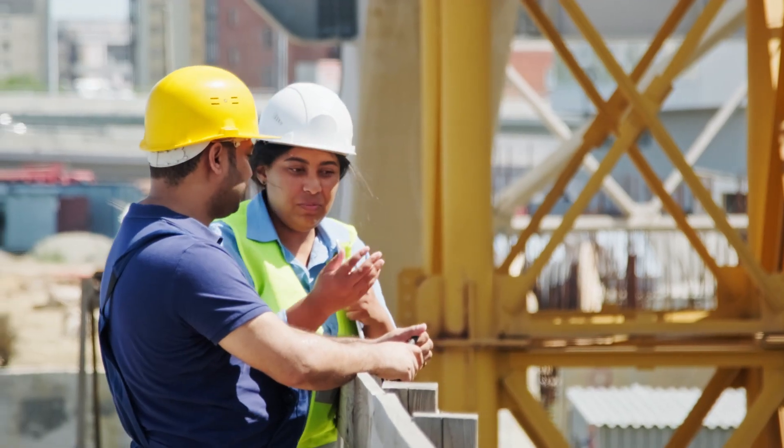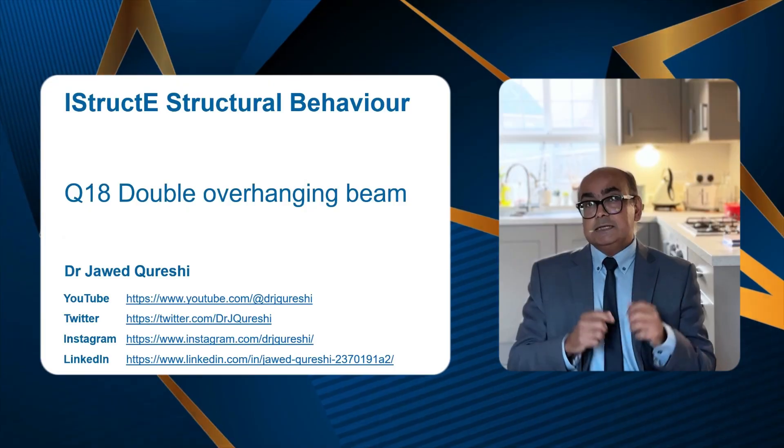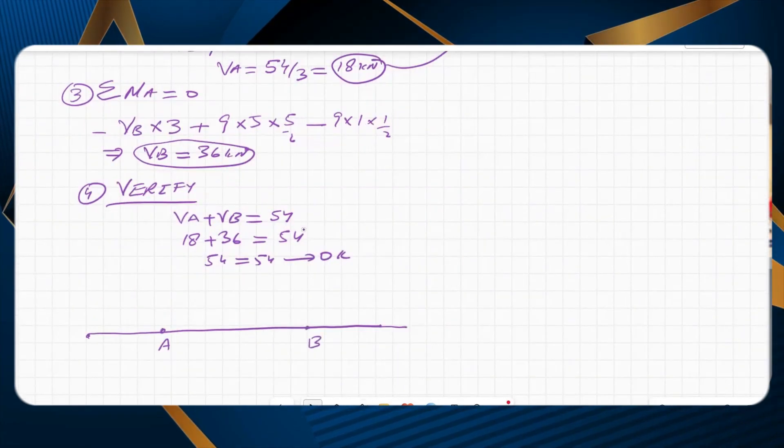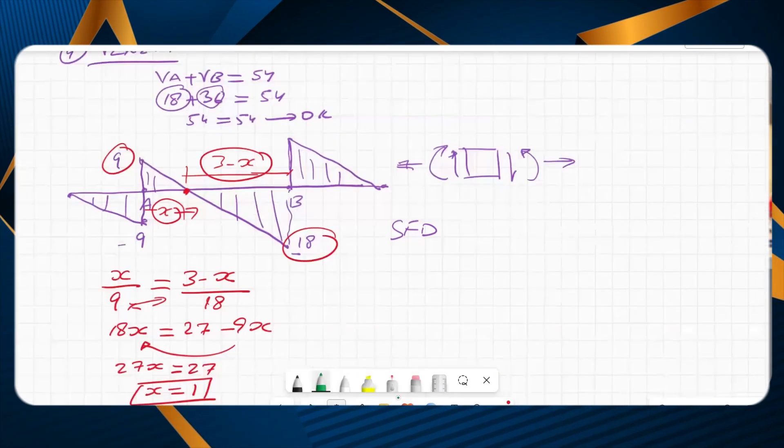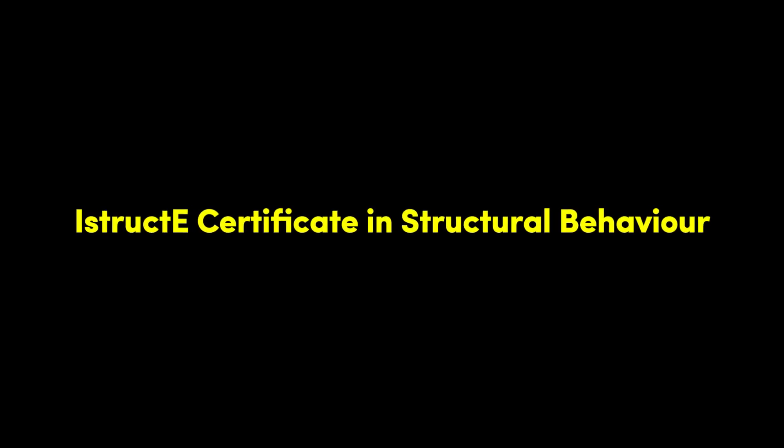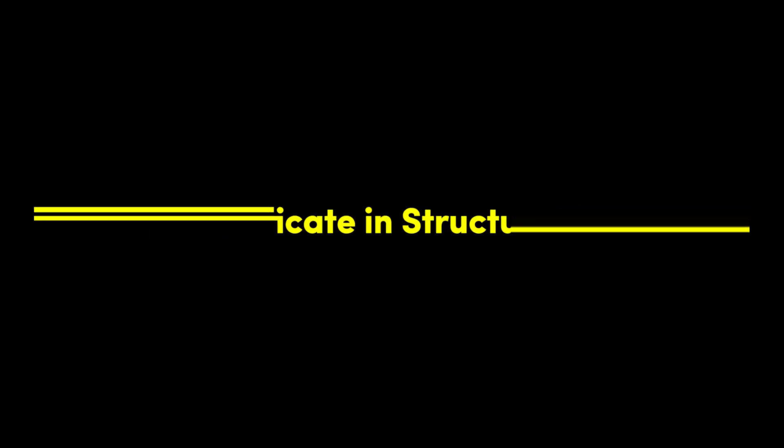Understanding structural behavior is a vital skill that every civil and structural engineer should have. In this tutorial I will talk about a double overhanging beam where I will plot its bending moment and shear force diagram. This is part of the ISTRACTE Certificate in Structural Behavior, or if you simply want to understand how structures work, this tutorial is for you. Let's dive straight into the example.